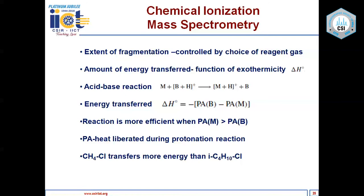The amount of energy transferred during the protonation reaction is a function of exothermicity: energy transferred equals the difference in proton affinity between the reagent gas and the sample molecules. The chemical ionization process is more efficient when the proton affinity of the sample molecules is higher than that of the reagent gas. Methane CI transfers more energy than isobutane CI because of their difference in proton affinity.